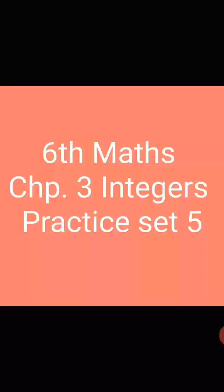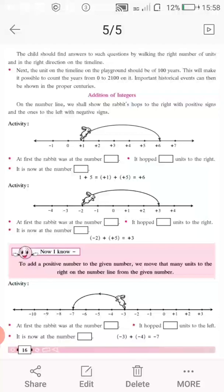Sixth Maths, Chapter 3, Integers, Practice Set 5. Students, let us learn addition of integers. First, we shall learn using a number line. Here is a small activity. On the number line, remember, we shall show the rabbit's hops to the right with positive signs, and when the rabbit hops towards its left, we shall show it with negative signs. Kindly open your textbook to page 16.